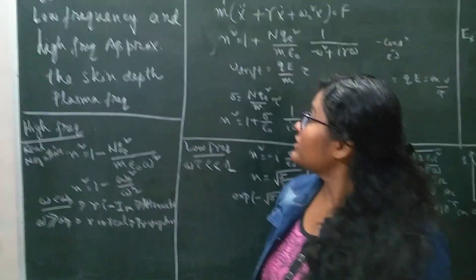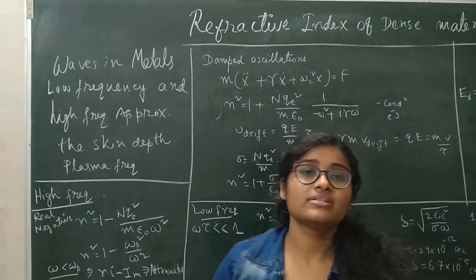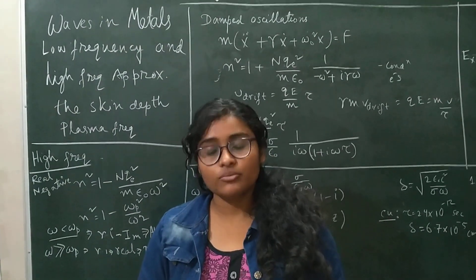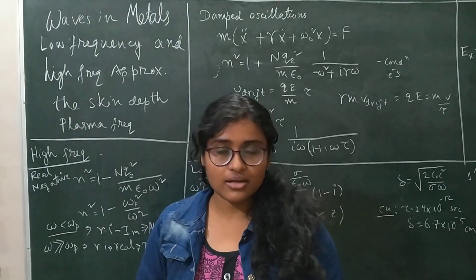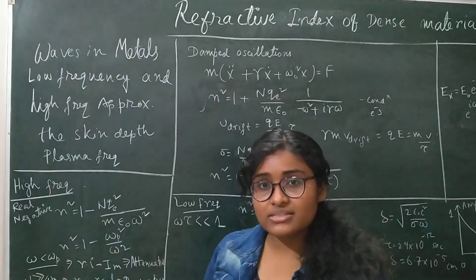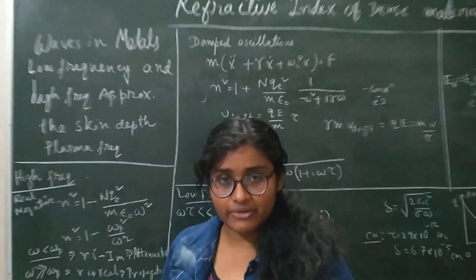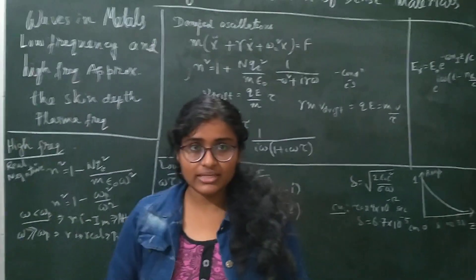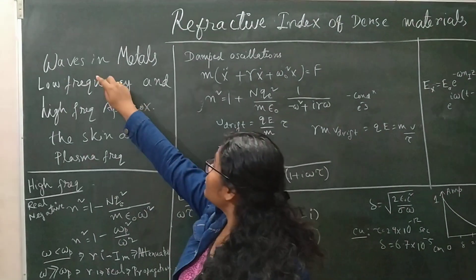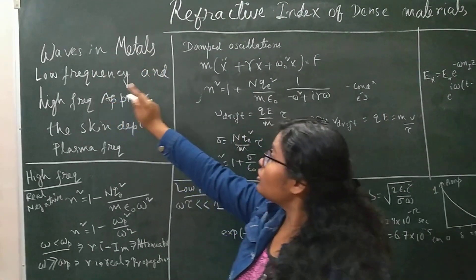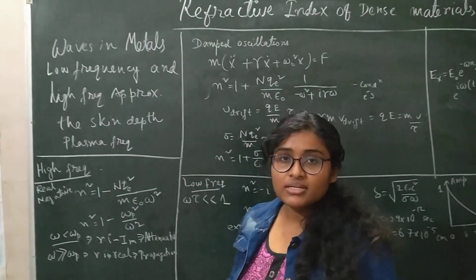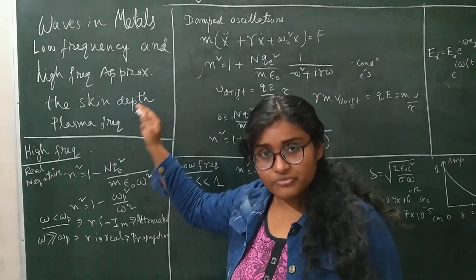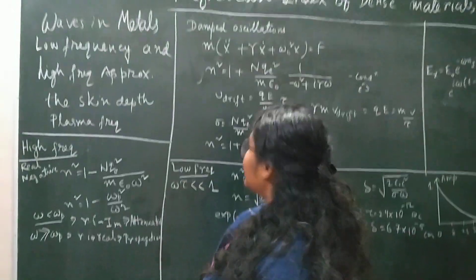Today I will discuss waves in metals. In metals there is also a refractive index — where it comes from and what the refractive index means in metals, and what kind of properties it will show. I will discuss waves in metals and their low frequency and high frequency approximations, as well as properties like skin depth and plasma frequency. So let us start.